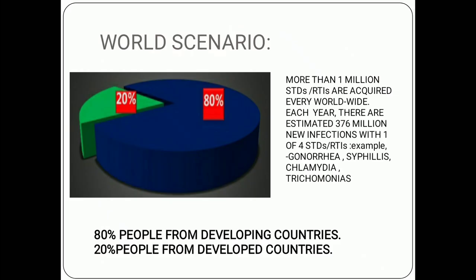Looking at the world scenario, more than 1 million STDs and RTIs are acquired every day worldwide. Each year there are an estimated 376 million new infections with one of four STDs and RTIs — for example gonorrhea, syphilis, chlamydia, and trichomonas. The pie chart shows 80% of cases come from developing countries and 20% from developed countries.